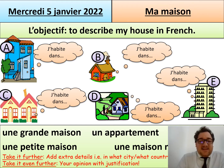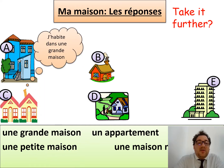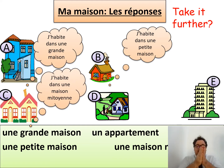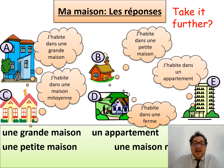Now that you have completed the exercise, let's have a look at the correction. For the first one, you should have said: j'habite dans une grande maison — I live in a big house. For B: j'habite dans une petite maison — a small house. Letter C: j'habite dans une maison mitoyenne — a semi-detached house. Letter D — it doesn't happen a lot in the UAE — j'habite dans une ferme. And letter E: j'habite dans un appartement. Of course, you could have also said j'habite dans une villa, which is also quite common in the UAE.